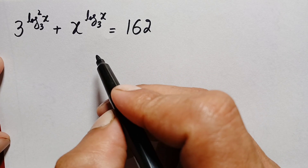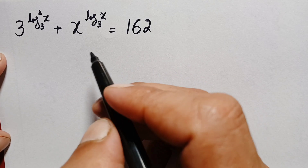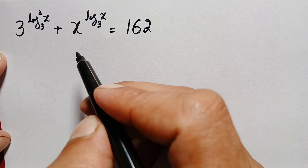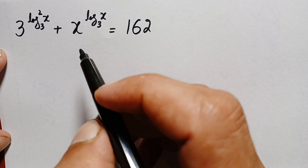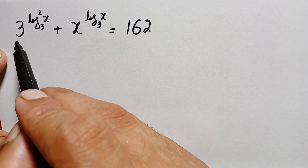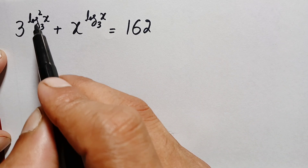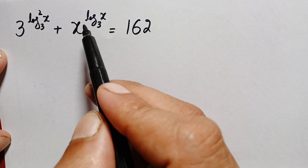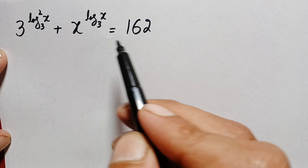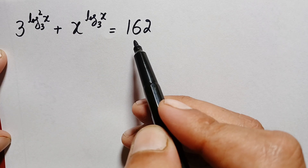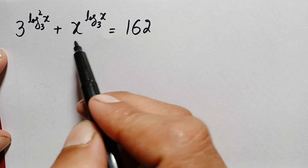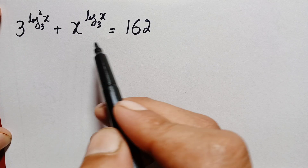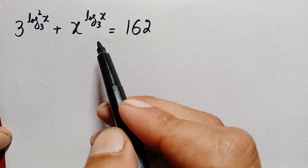Hello everyone, welcome. Today we have a new beautiful logarithm math problem, which is 3 raised to power log base 3 squared of x, plus x raised to power log of x with base 3, is equal to 162. We will try to find the value of x.